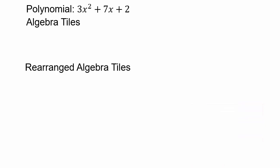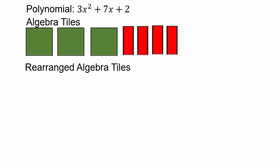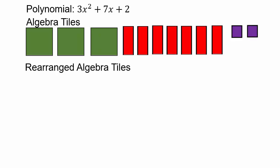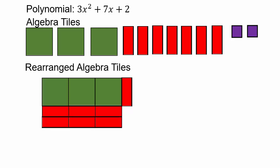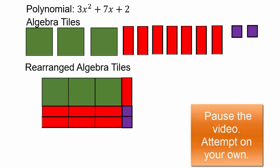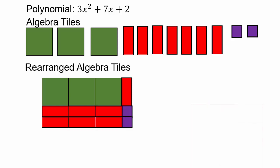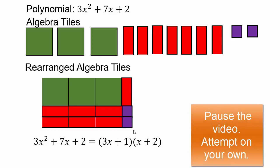Assuming you've come back, it probably looks like this: 3 x squares, 7 x's, and 2 singletons. To make them into a rectangle, there are many different answers, but the resulting area will be the same. If I go horizontally with the x squares, then the red pieces go in a row of 7, and the 2 singletons go in the corner. So: horizontally that's 3x plus 1, and vertically that's x plus 2.